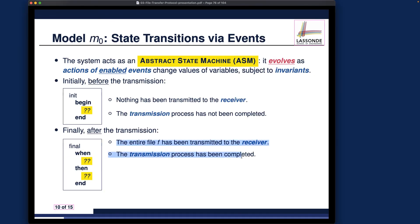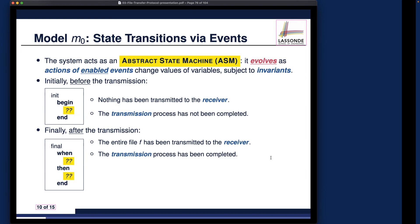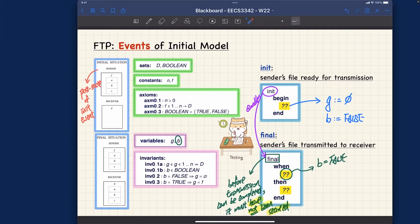For the action part of the final event, refer back to the two earlier hints. It will be similar to what we did for the init event, but with different values. You can now pause the video and think about what the actions should be. The post-states for the final event correspond to the final configuration shown here.